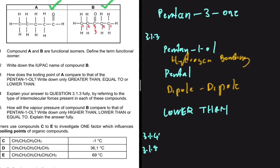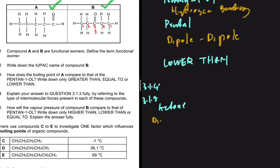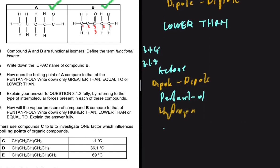For 3.1.5, how will the vapor pressure of compound B compare to that of pentan-1-ol — higher than, lower than, or equal to? Explain the answer fully. Compound B, as we've already deduced, is a ketone. The intermolecular forces in ketones are dipole-dipole forces, and in pentan-1-ol we have hydrogen bonding. That will lead to the ketone having a higher than vapor pressure compared to pentan-1-ol.